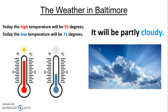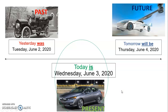The weather in Baltimore. Today, the high temperature will be 92 degrees, and the low temperature will be 71 degrees, and it will be partly cloudy. Yesterday was Tuesday, June 2nd, 2020. Today is Wednesday, June 3rd, 2020, and tomorrow will be Thursday, June 4th, 2020.